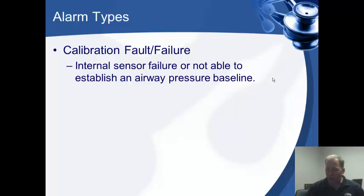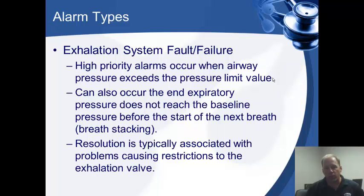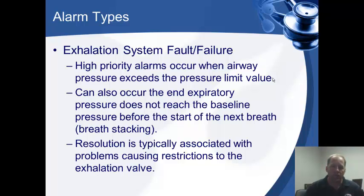A calibration fault or failure means that during startup self-test something didn't go right. You should find this early in the morning when you turn it on. If you find a problem, don't take that vent out for the day — put it back in for maintenance. An exhalation system fault gives a high priority alarm when airway pressure exceeds the pressure limit, or when at end-expiration the pressure does not reach baseline before the next breath starts. This means you're giving breaths before the patient has fully exhaled the last breath, overpressurizing the alveoli and increasing intrathoracic pressure — leading to drops in blood pressure and potentially cardiac arrest. Watch this very closely.